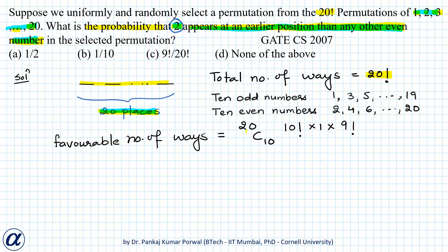So these are our favorable number of ways. So our probability will become favorable number of ways divided by total number of ways and if I simplify this 20 C 10 can be written as 20 factorial divided by 20 minus 10 factorial that is 10 factorial into 10 factorial into 10 factorial into 9 factorial divided by 20 factorial.